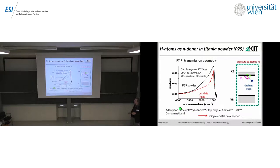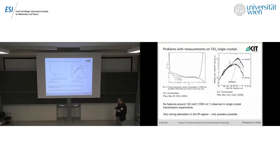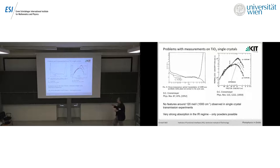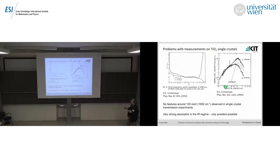Questions remained: are these defects? What role do vacancies play? Step edges? Is it anatase or rutile? To make collaboration with theory easier, we decided to get data for single crystals — very well-defined, as best as we can experimentally. However, there's a problem. If you go for infrared transmission through single crystals, there is a lot of absorption and you hardly get any signal. There is very old data by Kronemeyer showing there is an absorption in the infrared at about 1.5 eV, which must be related to polarons localized at oxygen vacancies.